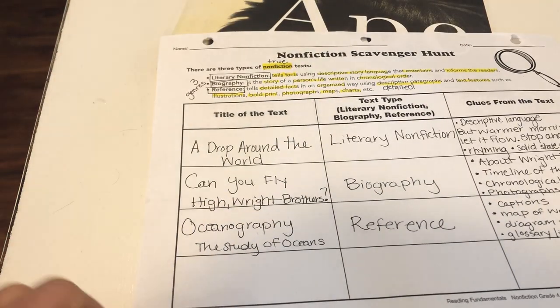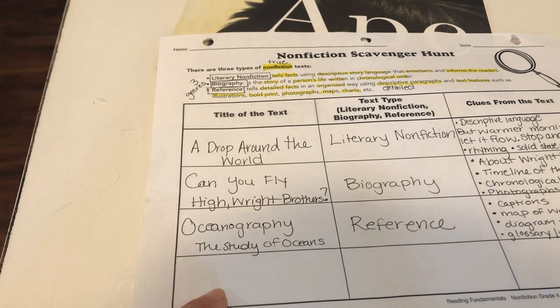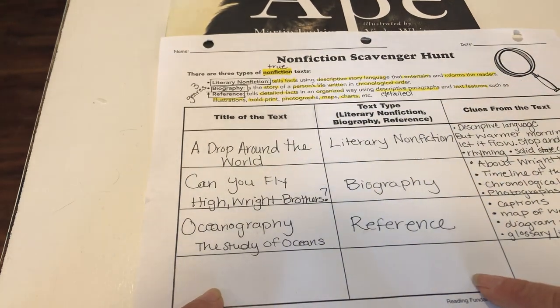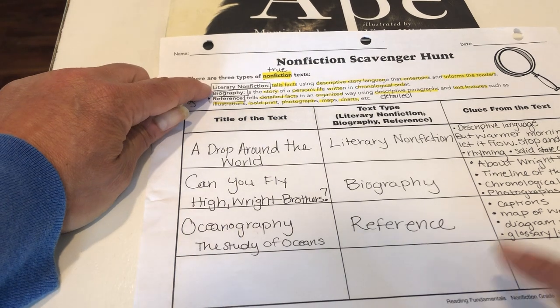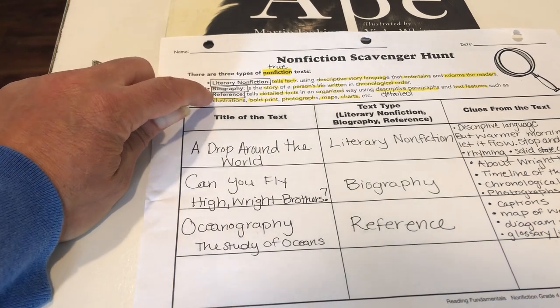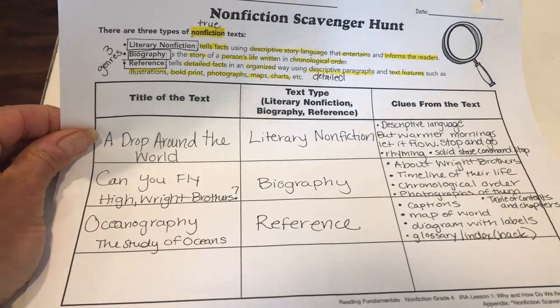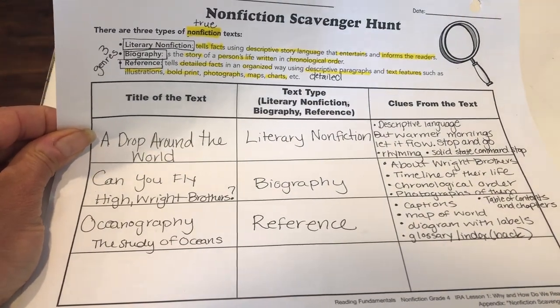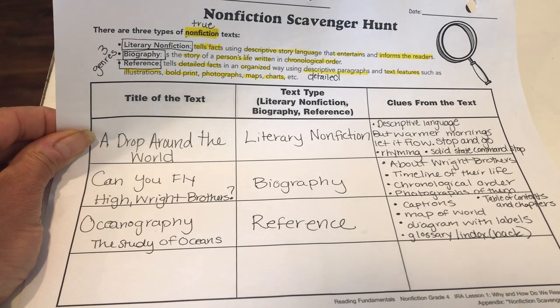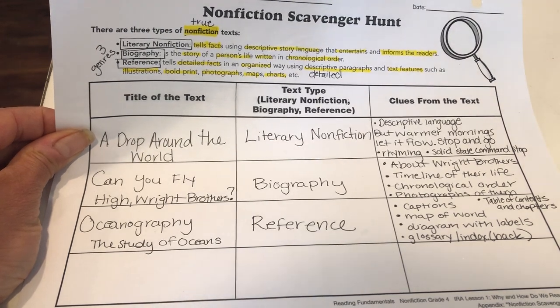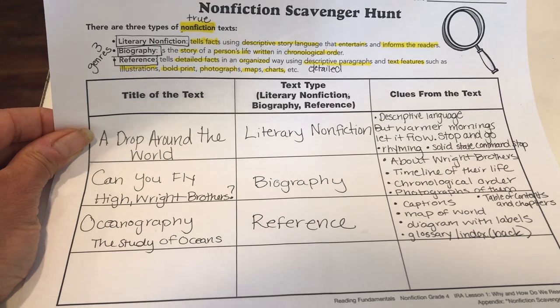So for your assignment today, you are going to tell me the title — which is 'Ape' — what genre you think it is: literary nonfiction, biography, or reference? And then you're going to give me at least three clues from what I just read that support why you think it is that genre. All right, have a great day, guys.